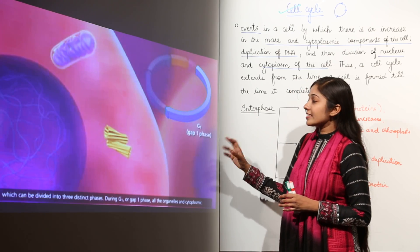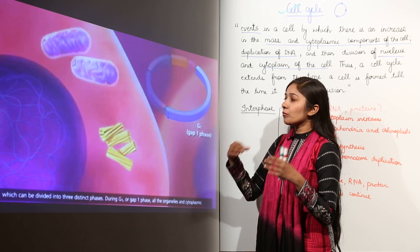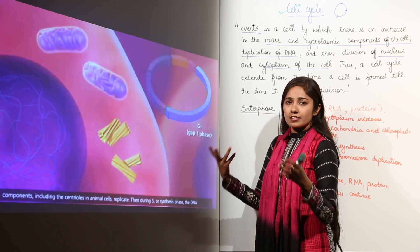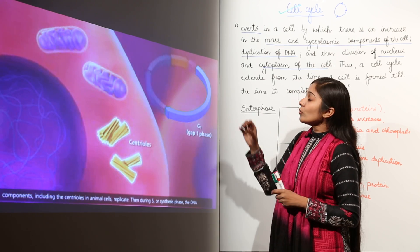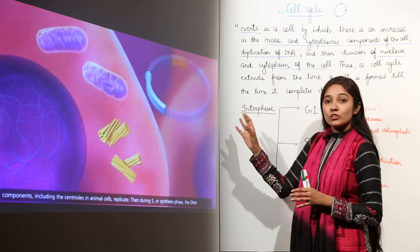Let us discuss what happens in G1 phase. Organelles, mitochondria, chloroplasts are synthesized, centrioles are synthesized, proteins and RNA are synthesized. So next, after that, cell enters which phase?